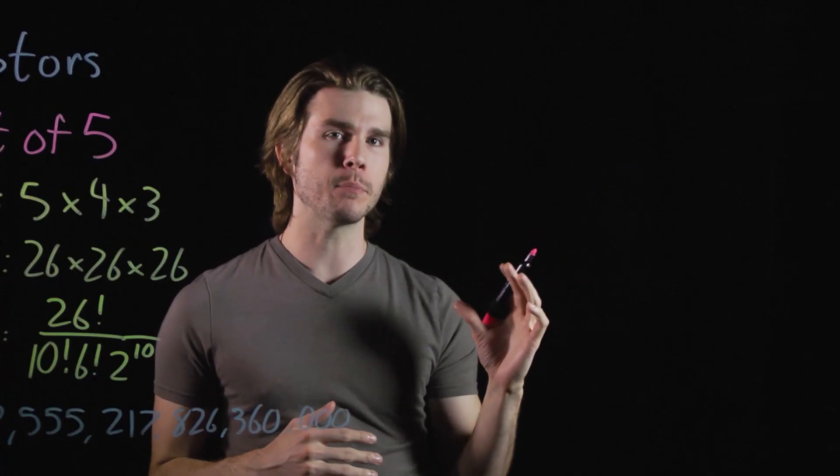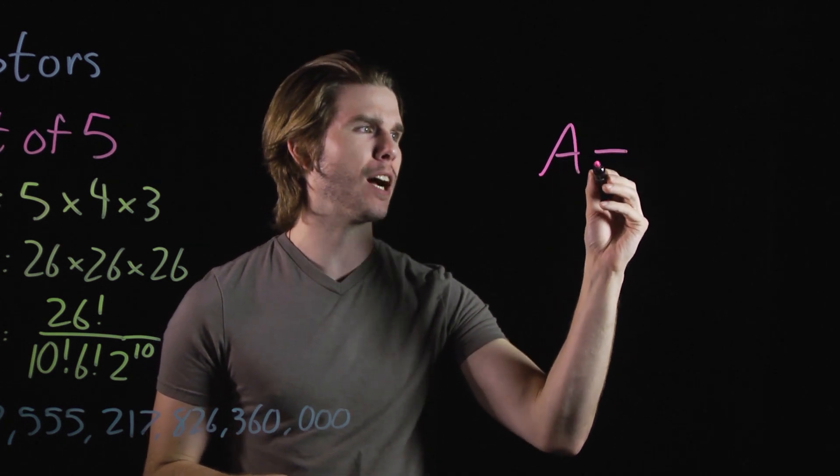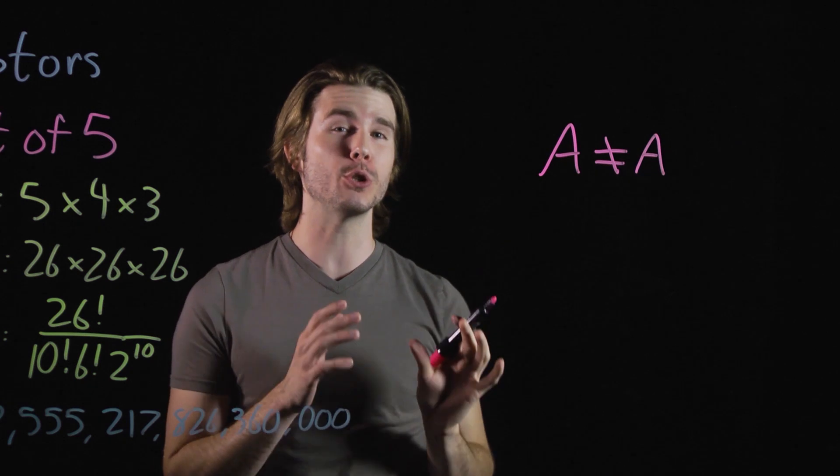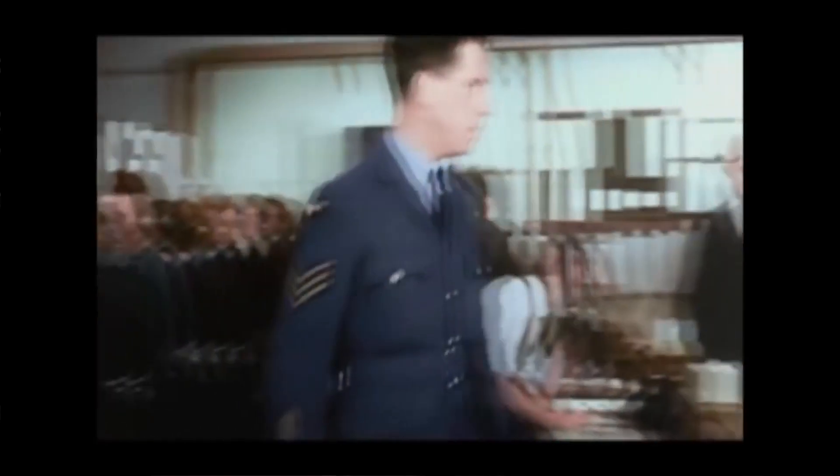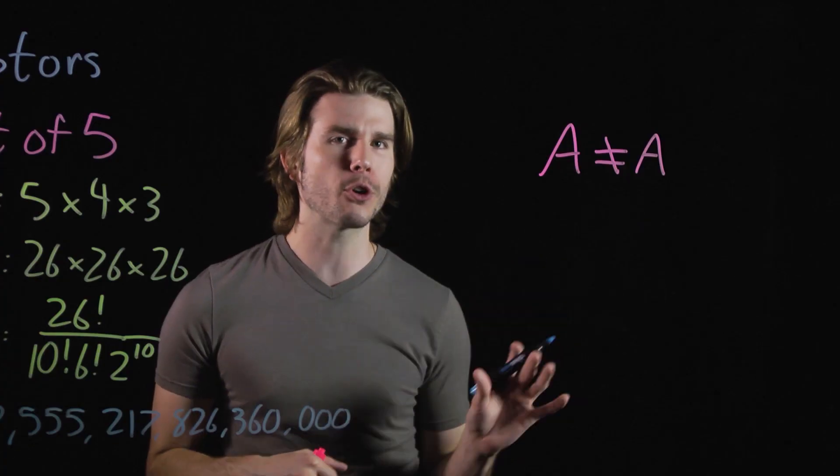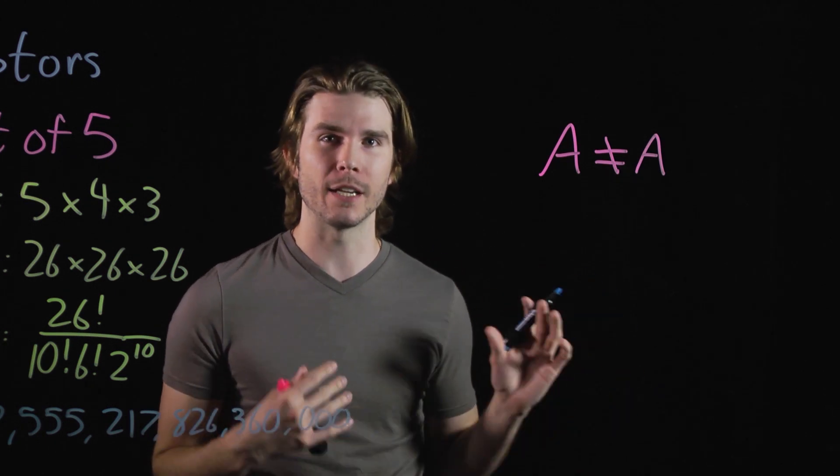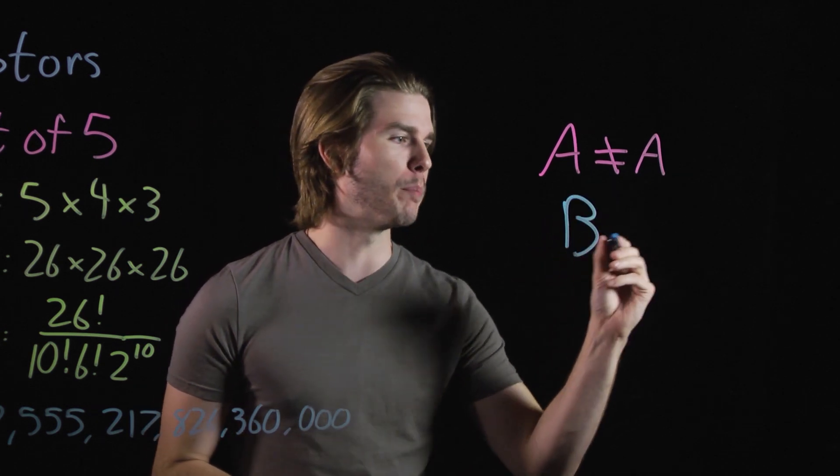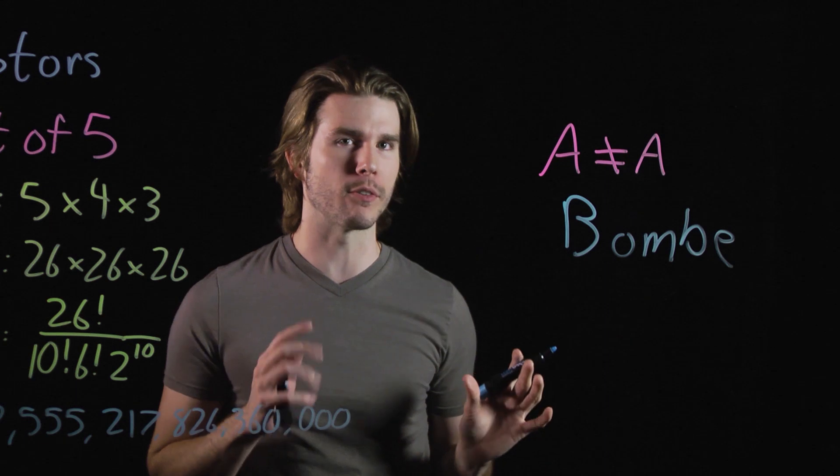The flaw in Enigma was that no letter could be enciphered as itself. So if you pressed A on the machine, it would never come back as A. That's a clue as to how Enigma worked. During the middle of the war, Turing and his code breakers knew how the rotors were wired up, but not the starting positions of those rotors, and therefore how to actually use an Enigma machine. So they created their own machine called the bomb that would sort through all these possible combinations and break the code.